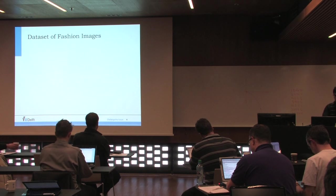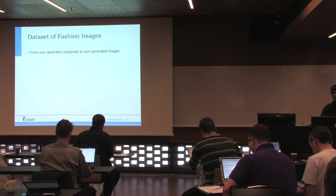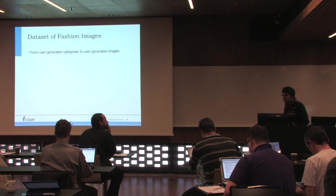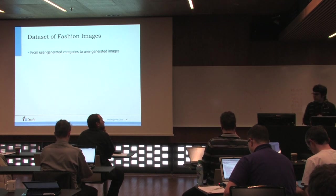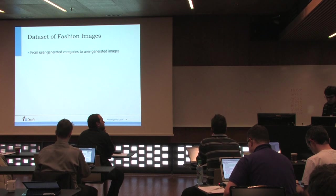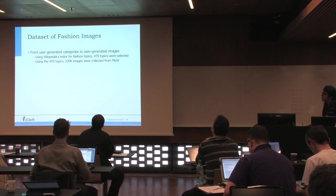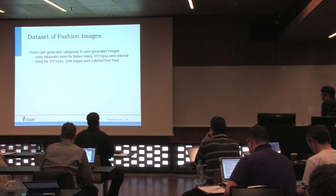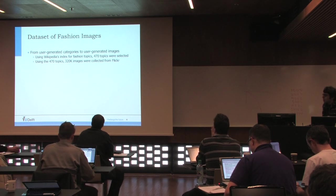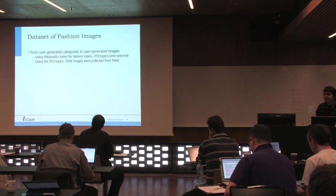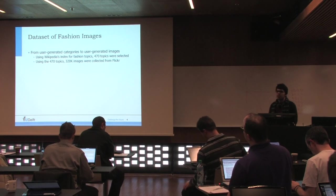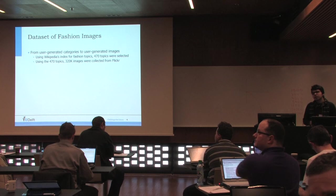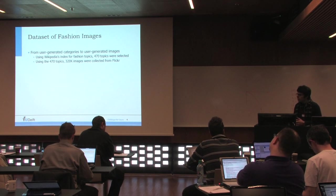Our strategy was to generate the dataset from user-generated content. We collected fashion-related categories from Wikipedia, and in total, we found 470 categories related to fashion and clothing. We then used those categories as queries to Flickr API and retrieved all the images. In total, we collected more than 320,000 images from Flickr.